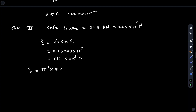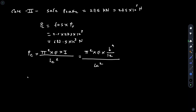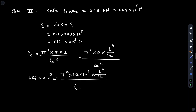Applying Euler's formula: P_c = π²EI / LE². Substituting I = B⁴/12, putting in the values: 687.5 × 10³ = π² × 1.3 × 10⁴ × (B⁴/12) / (2.5 × 10³)².